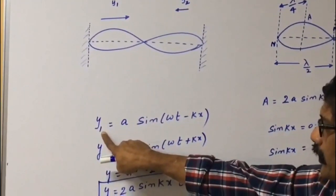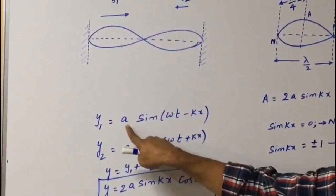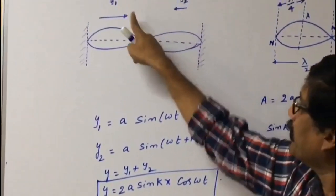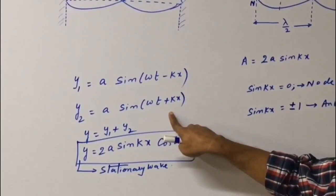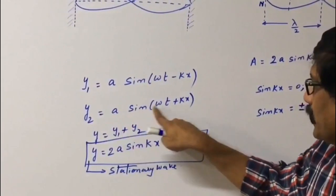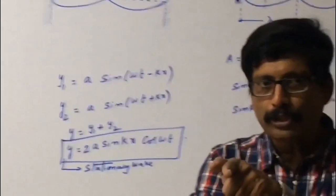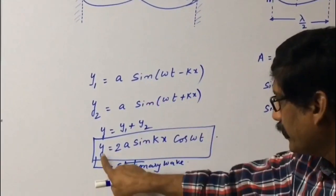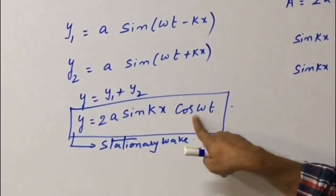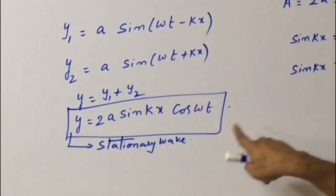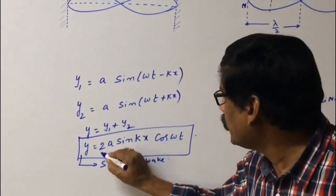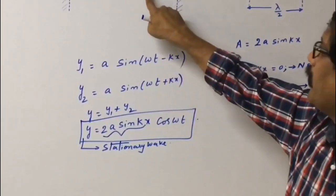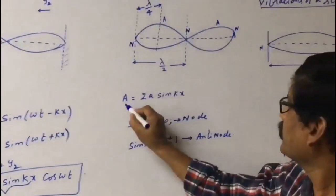If y1 represents a wave traveling towards the positive x direction, that is y1 = a sin(ωt − kx), and y2 represents a wave traveling towards the negative x direction, y2 = a sin(ωt + kx), then according to the superposition principle y = y1 + y2. Simplifying, y = 2a sin(kx) cos(ωt). This equation represents a stationary wave, where 2a sin(kx) is the amplitude of the stationary or standing wave.